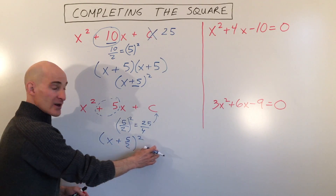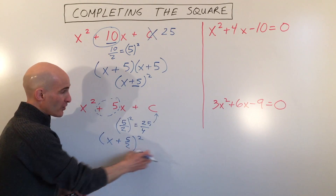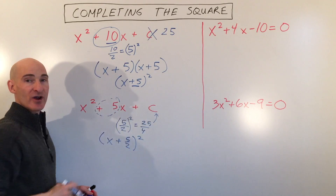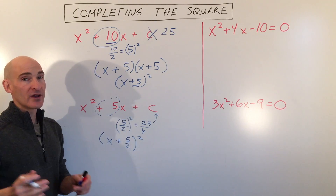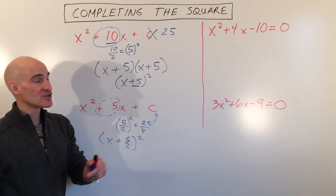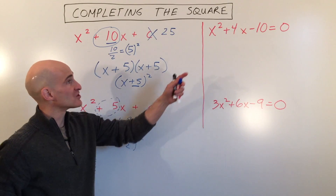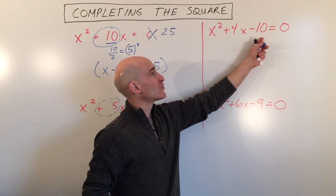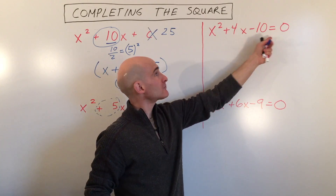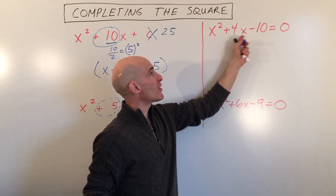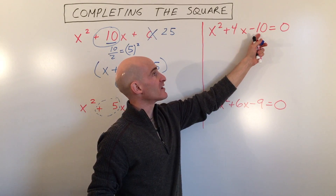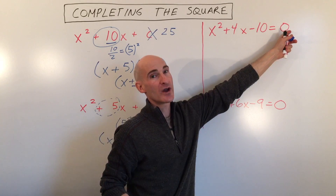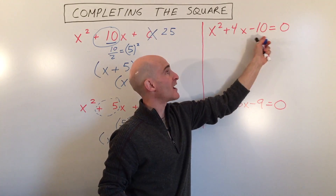If you want to double check, go ahead and write it twice, FOIL it out, and you'll see you get back the original expression. Now, how do we use that in solving equations? Let's take a look at this one over here. The first thing you want to do is get the constant on the other side of the equation, just to get it out of the way.